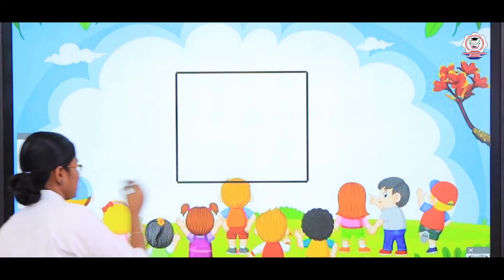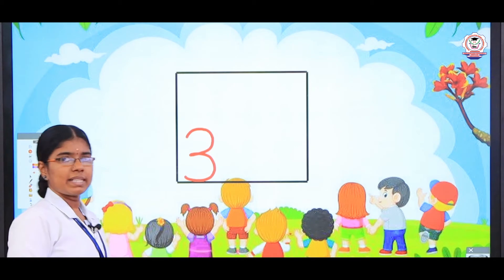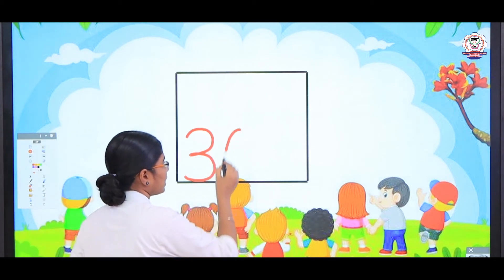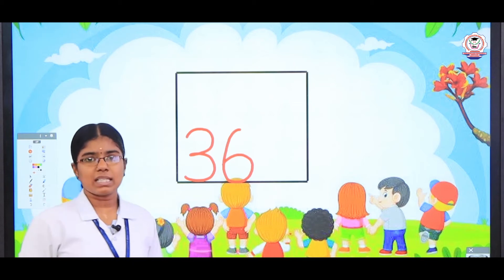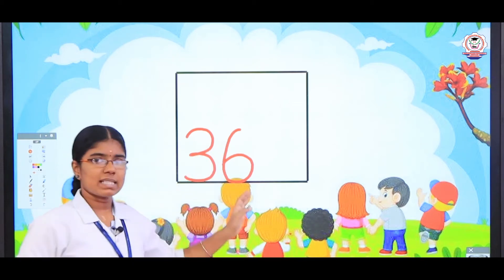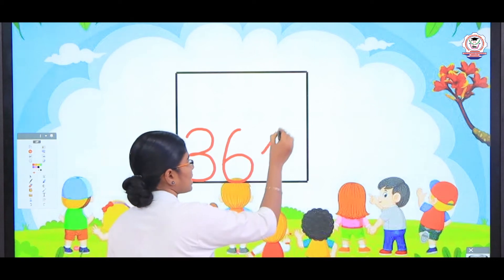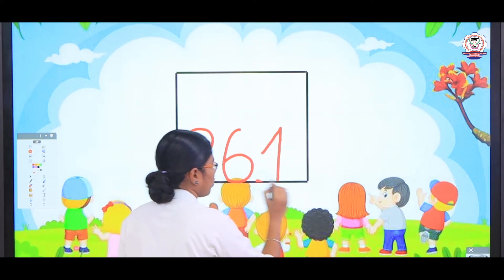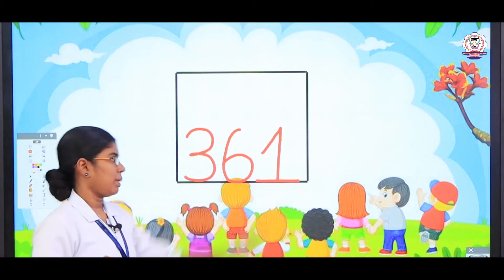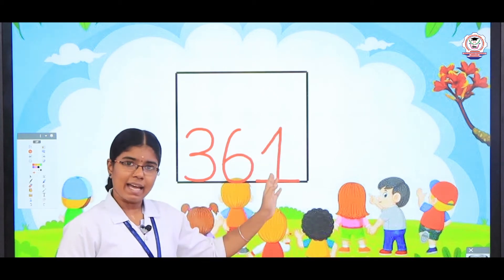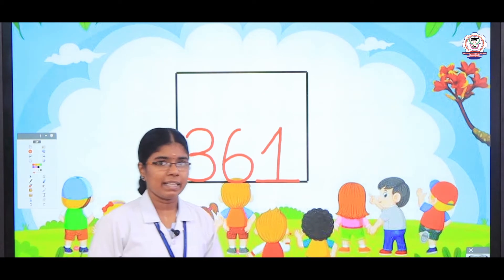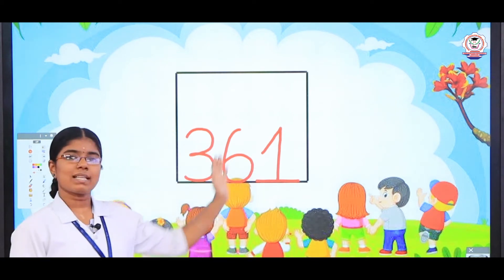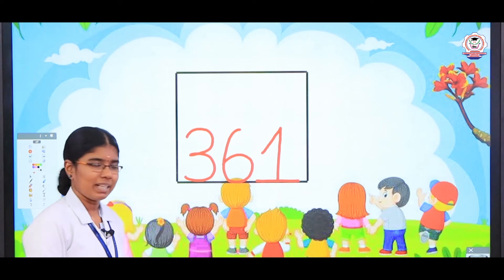So the very first number is 3, 6. How to write 6? Right open curve and then finish that curve with a circle. So 3, 6 and then 1. How to write 1? Slanting, standing, bottom of the standing line — you have to put a sleeping line. So 3, 6, 1 — 361.